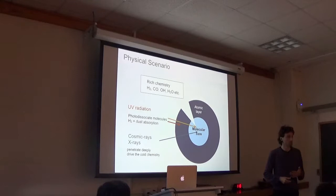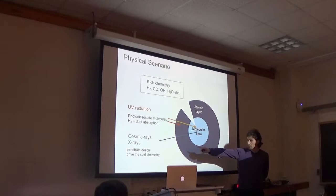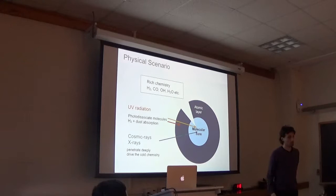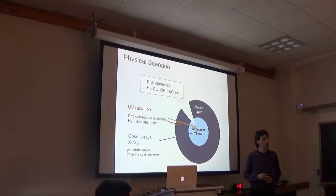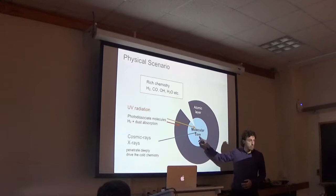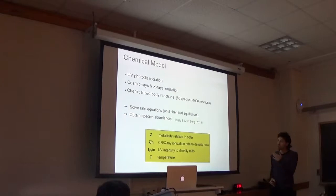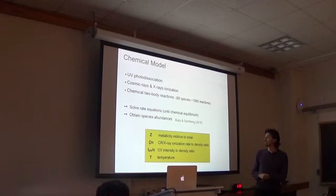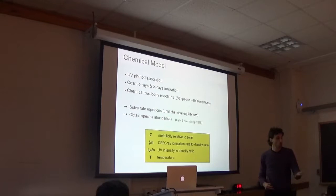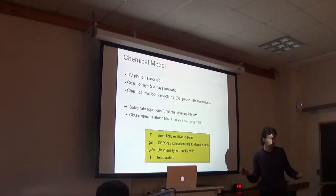And then from theoretical point of view, the abundances of molecules, of atoms, are important because they are the coolants of gas and then they affect the star formation and the masses of stars. The classical example is the transition from population 3 to population 2 stars. So the first stars, are they very massive, like 100 solar masses or maybe 10 solar masses? This is very active research and this depends on the cooling, not only, but also.